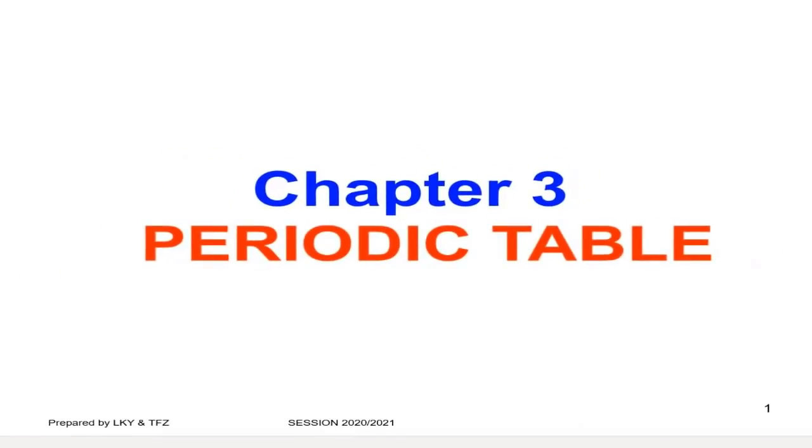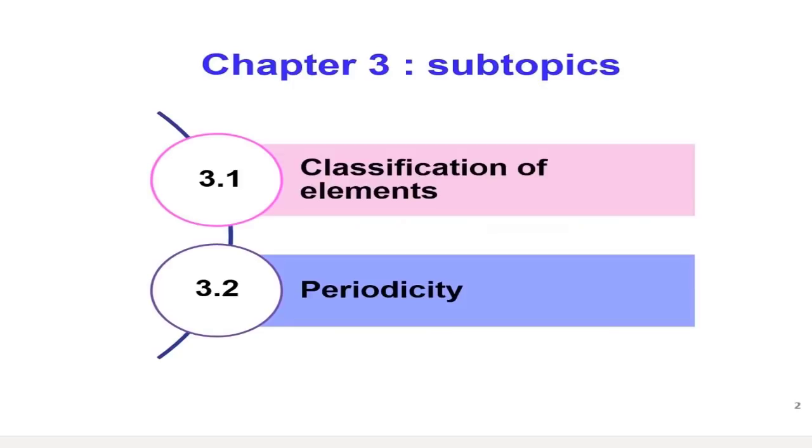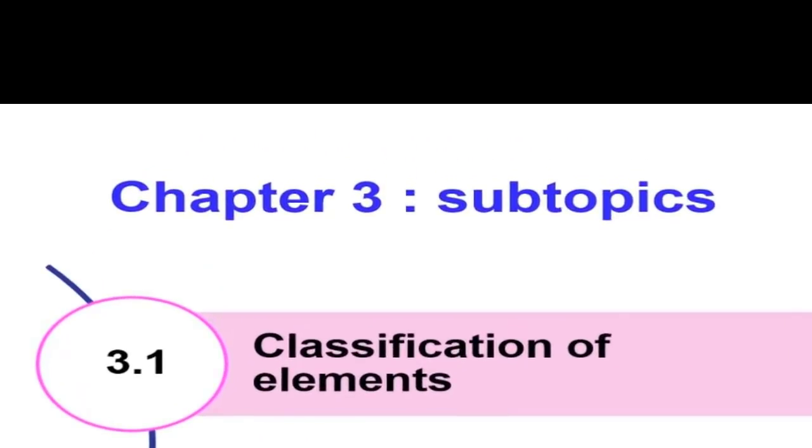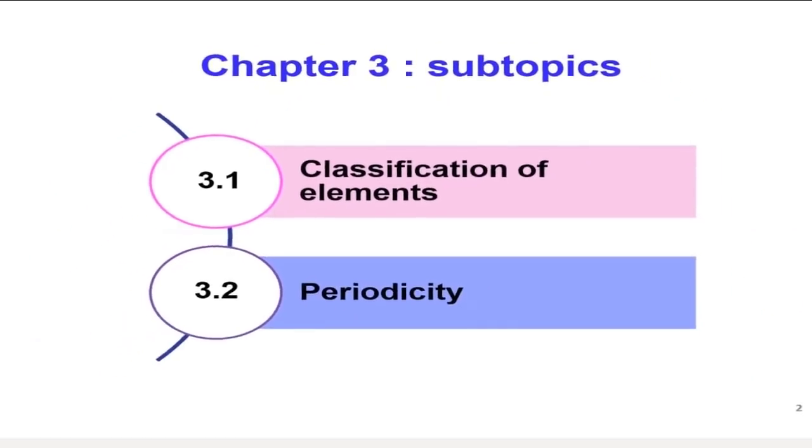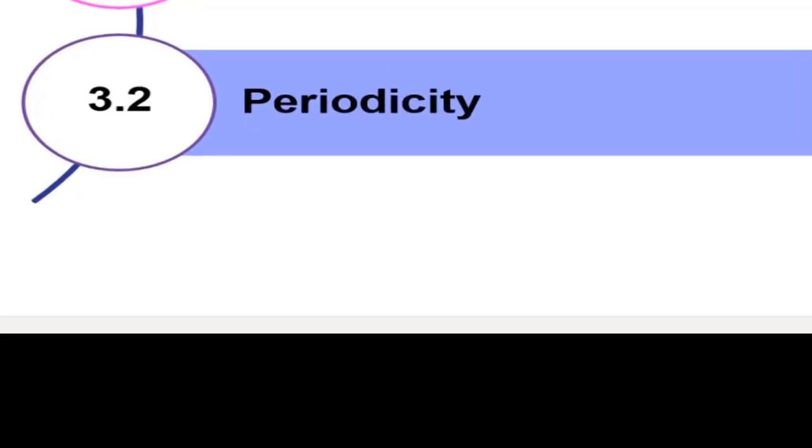The allocated time for this chapter is 2 hours. This chapter has two main subtopics: 3.1, classification of elements, and 3.2, periodicity.